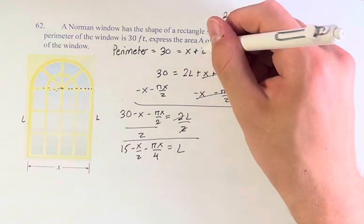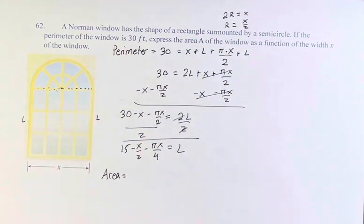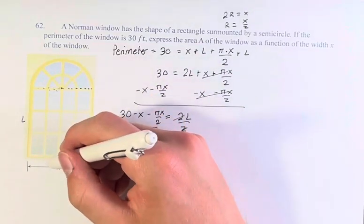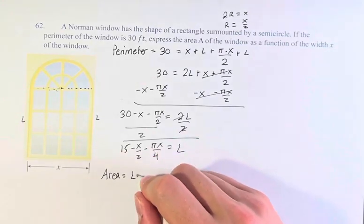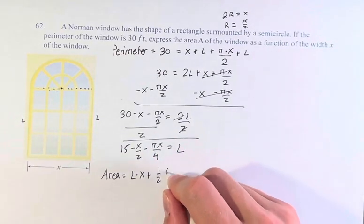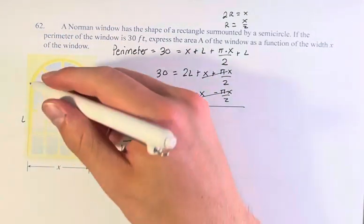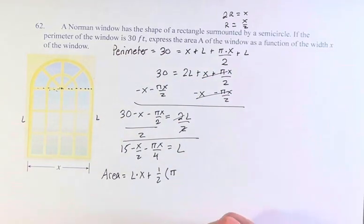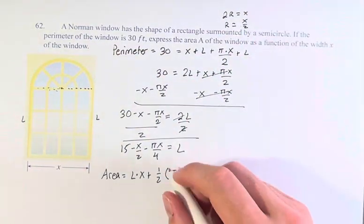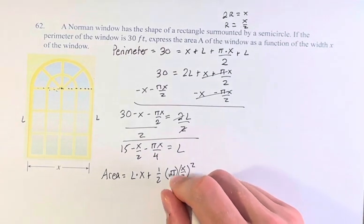So now we can use the area equation. The area is equal to the area of this rectangle, which is the length times the width, L times x, plus one half of the area of this circle. What is the area of the circle? Pi r squared, pi times the radius squared. So pi times the radius x over 2 squared. Make sure not to square the pi.